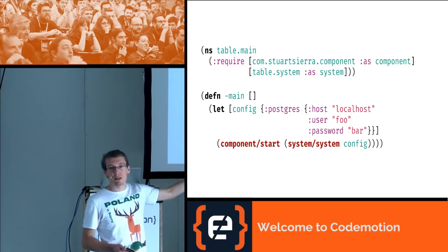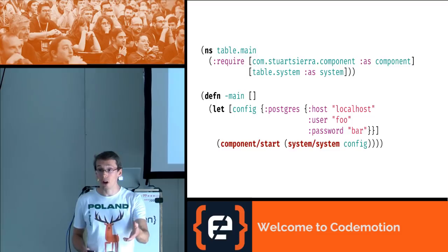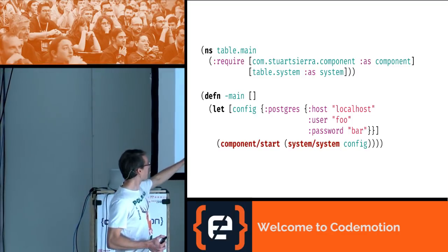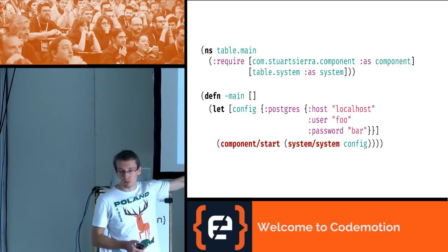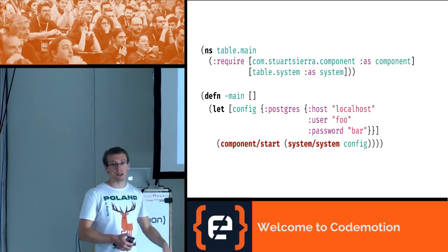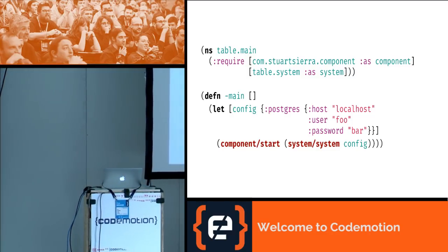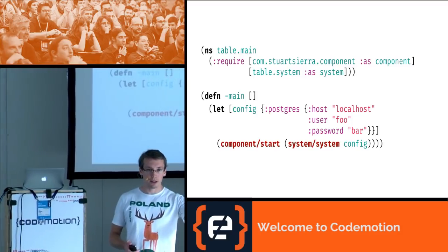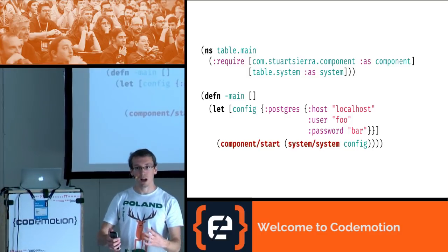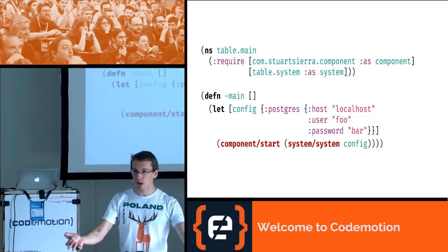In main I'm getting configuration from somewhere — from environment, a file, maybe ZooKeeper; here I'm just hard-coding it — then passing my configuration into the system function and using component/start to start the whole thing. What happens as a result: the configuration is passed to Postgres, Postgres connects, after it's ready it's put into context under the save-booking key, the context is passed to the handler, the handler is started opening the TCP connection, and the whole thing waits for clients to come in and book tables.